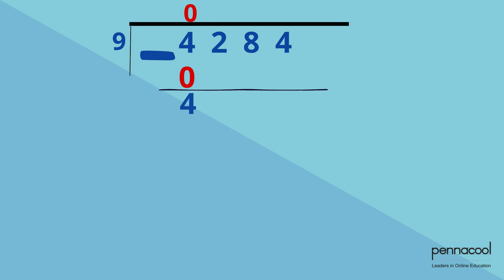We now bring down the next number in line to be divided, which is 2. We now have 42 divided by 9.